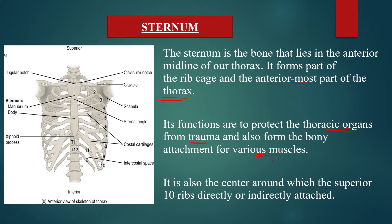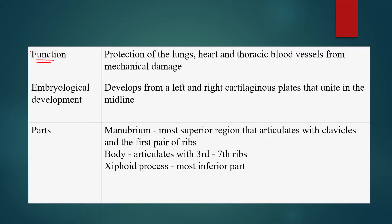The sternum is also a center to which the superior ten ribs are directly or indirectly attached. The first seven ribs attach directly to the sternum, while the remaining ribs attach indirectly. So it gives the rib cage a center to join together — ten ribs are joined to the sternum directly or indirectly. It also protects your thoracic blood vessels from any mechanical damage.